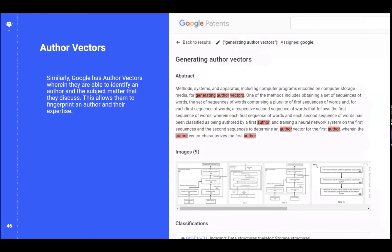Google has representations of websites and author representations — so when we talk about E-E-A-T, it's really leveraging all these embeddings across a variety of different aspects to determine how things are related. Tools like Screaming Frog and others are now allowing us to understand our content this way — you can vectorize it yourself, see how relevant it is, and think about adjusting it to be more relevant in these consideration sets. From my perspective, this is the missing link between what Google is doing and what we're able to do as SEOs.